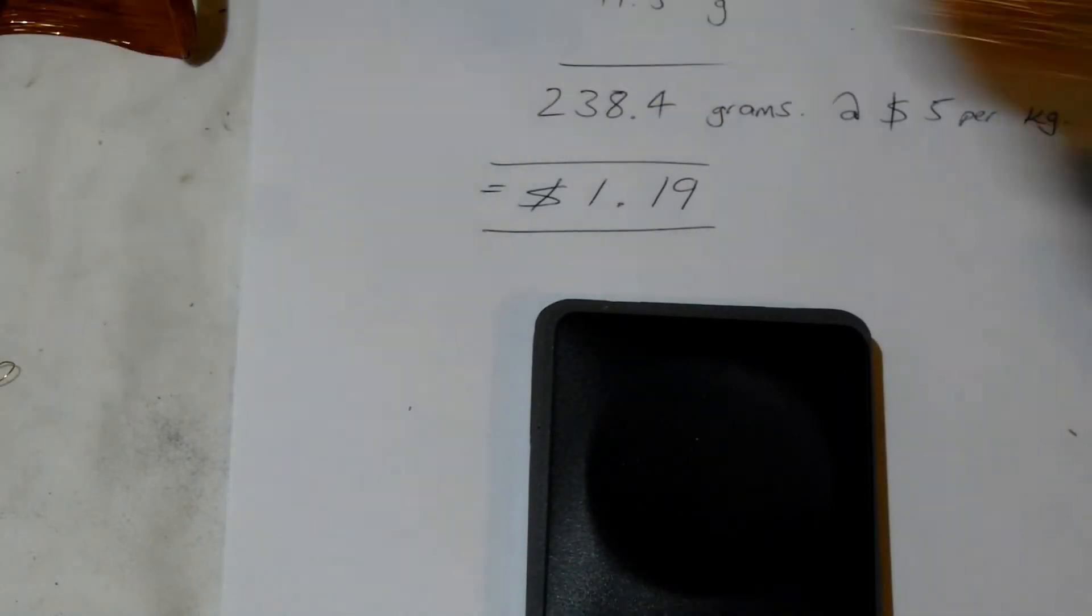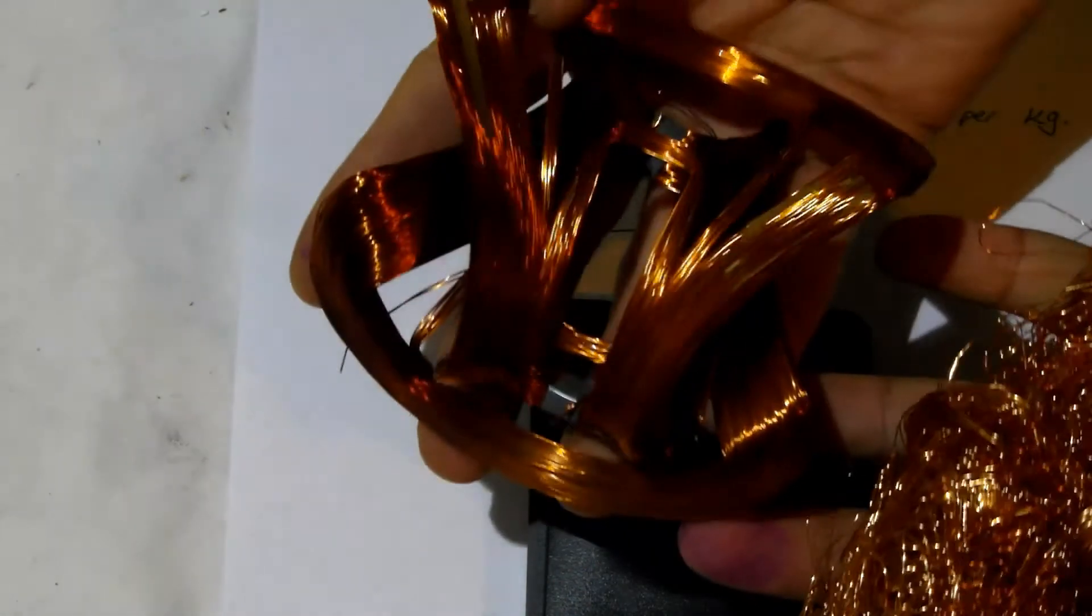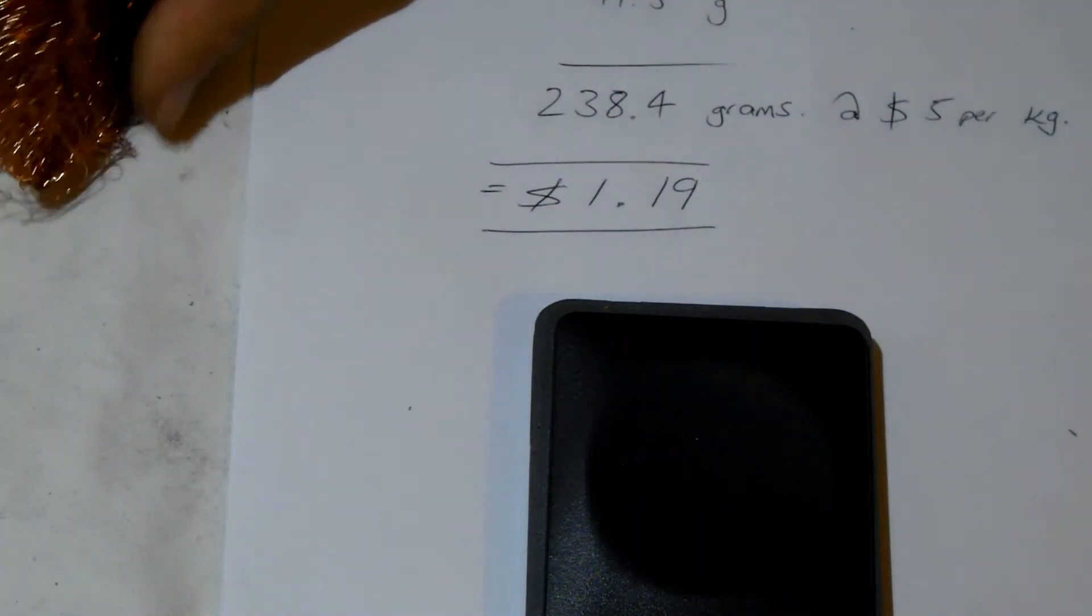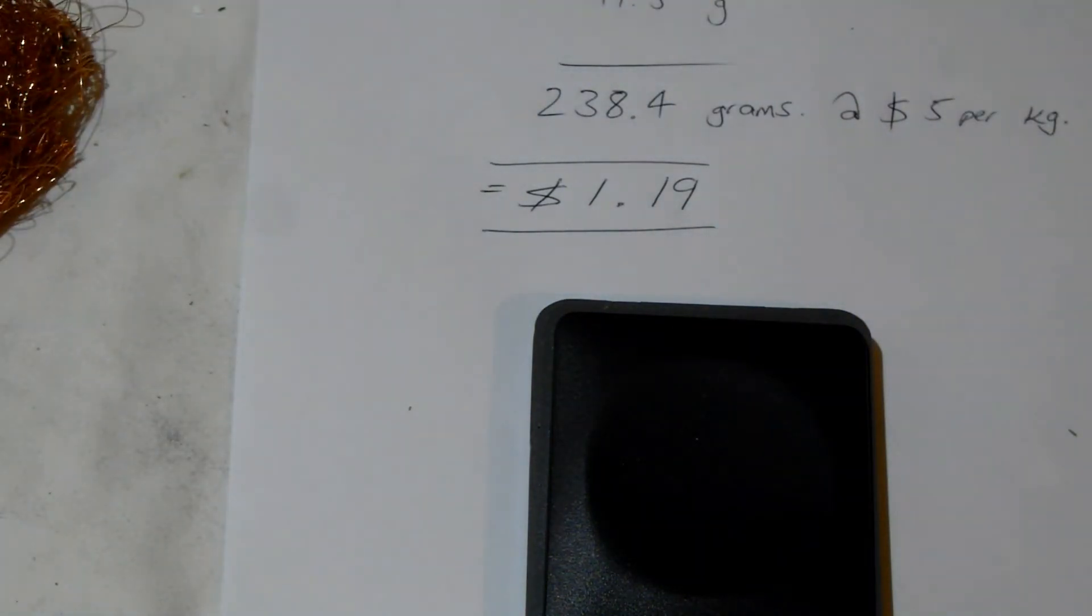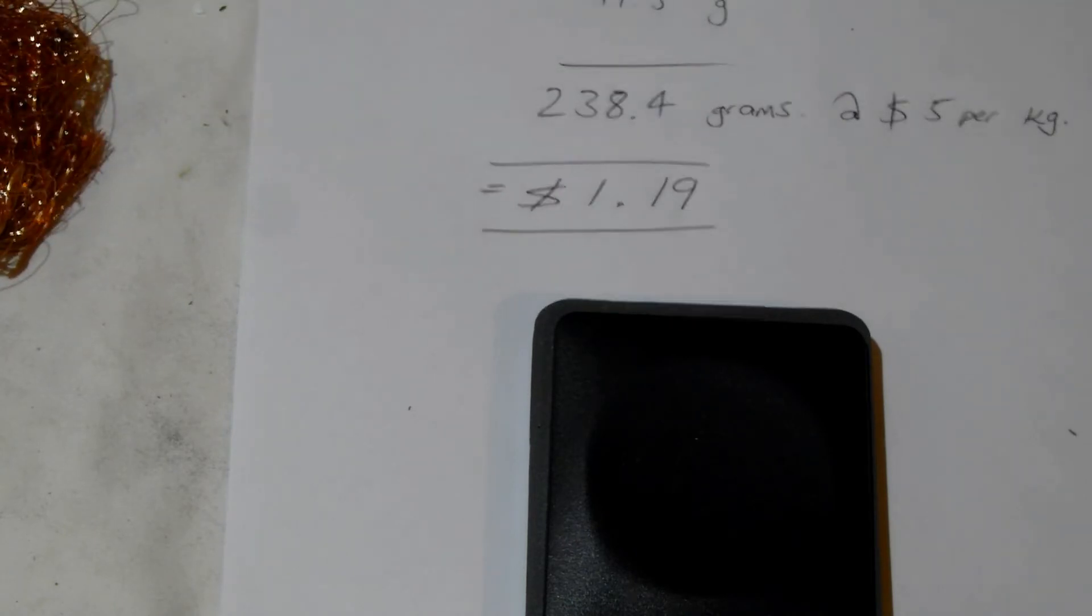You get about $1.19, roughly $1.20 for all that. Now it's not a great deal of income, but if you've got a constant supply of yokes, it's better than throwing $1.20 straight into the bin.